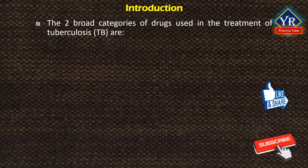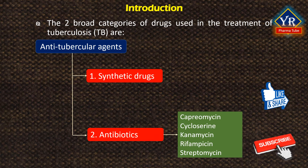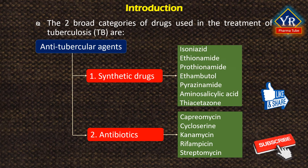The two broad categories of drugs used in the treatment of tuberculosis are synthetic drugs and antibiotics. In this lesson, we learn the synthetic anti-TB drugs. Several categories of synthetic compounds have been examined for anti-tubercular activity. These drugs include isoniazid, ethionamide, prothionamide, ethambutol, pyrazinamide, aminosalicylic acid, and thiacetazone.